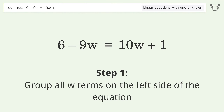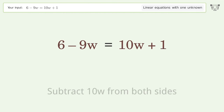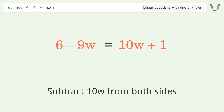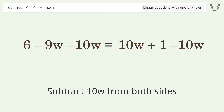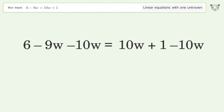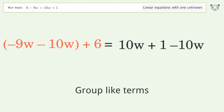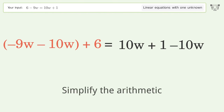Group all w terms on the left side of the equation. Subtract 10w from both sides. Group like terms. Simplify the arithmetic.